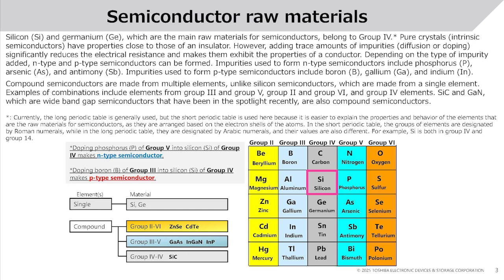Impurities used to form n-type semiconductors include phosphorus, arsenic, and antimony. Impurities used to form p-type semiconductors include boron, gallium, and indium.